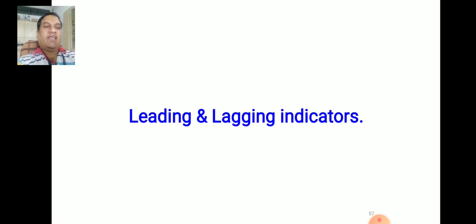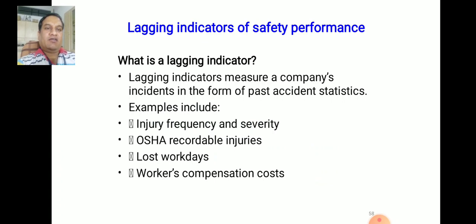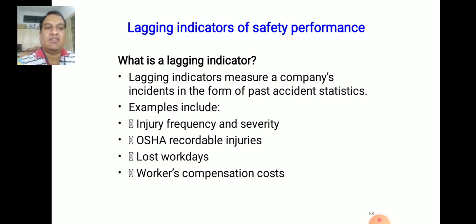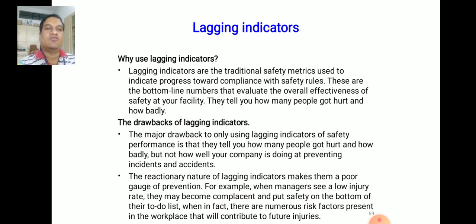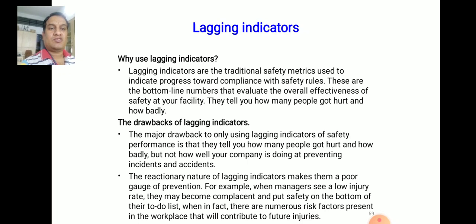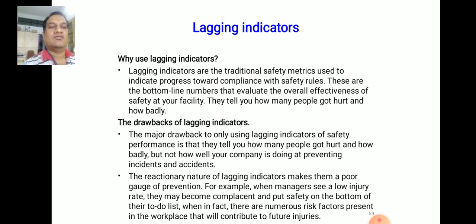There are leading and lagging indicators in safety performance. Lagging indicators measure a company's past accident statistics. Examples include injury frequency and severity, OSHA recordable injuries, lost workdays, and workers' compensation costs. Lagging indicators are traditional safety metrics used to indicate progress toward compliance with safety rules, but their drawback is that they only show the statistics and effects of injuries — not how to prevent future events.